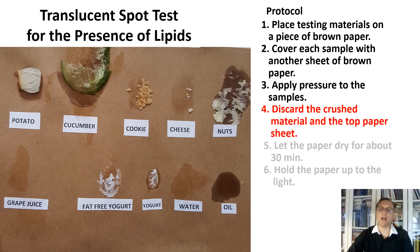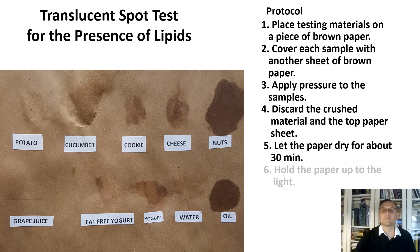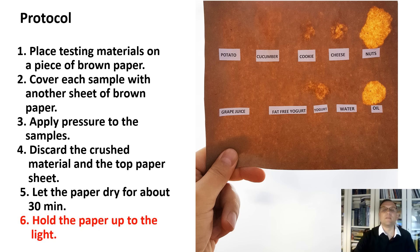Discard the crushed material and the top sheet of paper. Let the sheet of paper dry for about 30 minutes. Hold the paper up to the light. As you see, fats and oils on the paper make a permanent, translucent, see-through spot.